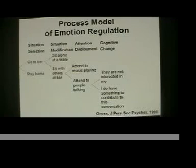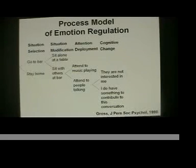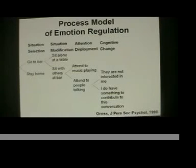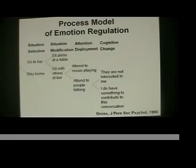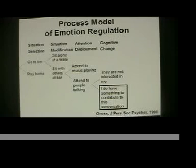Having decided to listen to the people, she then might think or have a belief or interpret things in different ways. For example, she could think 'oh, they're not interested in me' — that's one way of thinking. Another thought could be 'I do have something to contribute to this conversation.' This is the cognitive change or cognitive interpretation that can strongly influence the types of emotions that will or will not arise. This is what we call cognitive reappraisal — thinking in a way to modify the meaning of a situation to make it less negative or, in some cases, more positive.